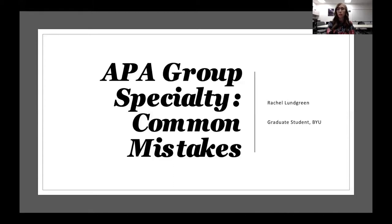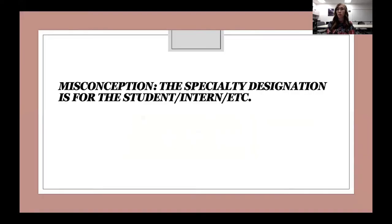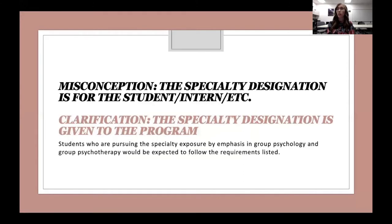The number one misconception has been related to who the specialty designation is for. An academic program, as an example, may think that their students are the ones to get the designation. But in reality, the designation is for the program itself. So if a student is interested in the APA group specialty, they would be expected to have the experiences related to group that a program offers, but the designation itself is actually given to the program.